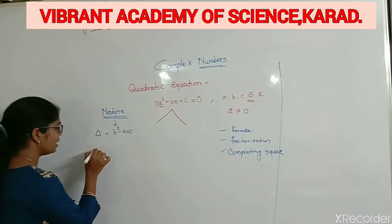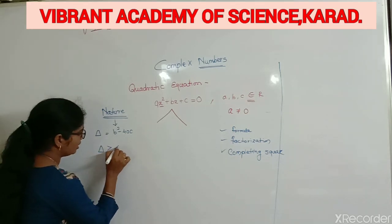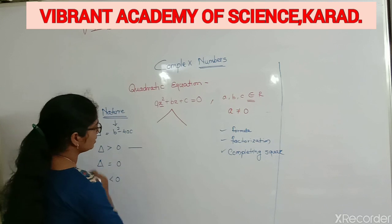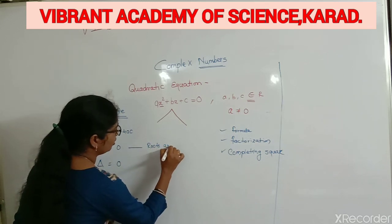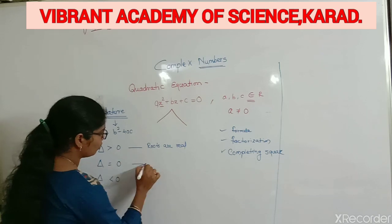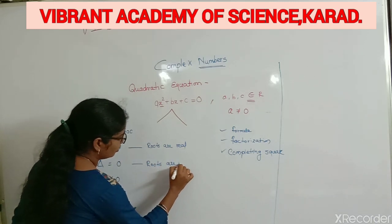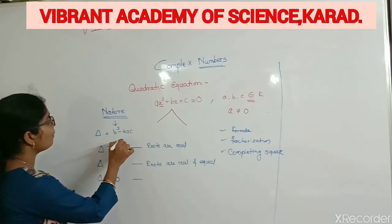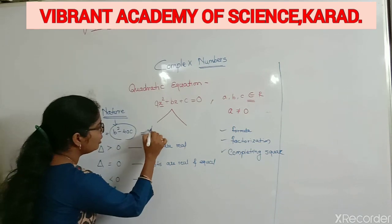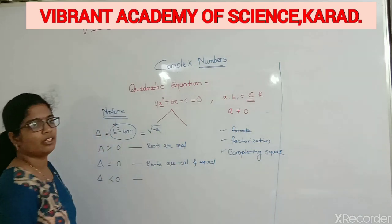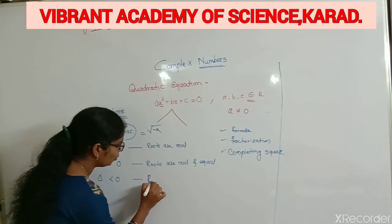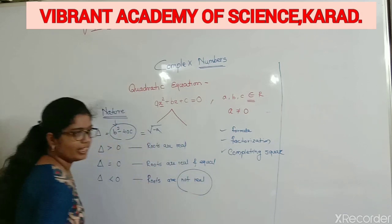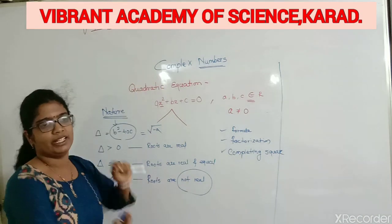That's the condition — delta equals b²-4ac. When delta is greater than 0, the roots are real. When delta is equal to 0, the roots are real and equal. When delta is less than 0, the value of b²-4ac is negative, and then the roots are not real. So these are not real numbers — they are complex numbers.